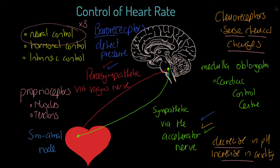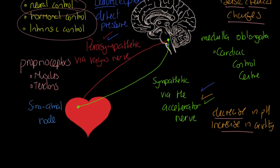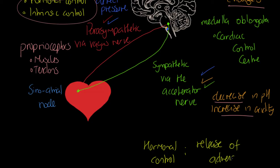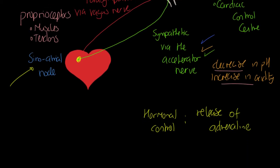Now I want to address the other two types of control. Hormonal control no longer involves the brain at all. When you prepare yourself for exercise, you probably realise you have this anticipatory rise — we get this release of adrenaline. What adrenaline does is it acts directly onto the sinoatrial node, stimulating a greater rate of contraction. So if we anticipate exercise, or if we become agitated — it's actually part of that fight or flight response — then that hormonal control can kick in.